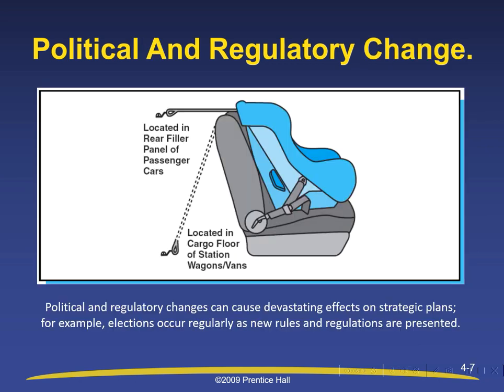Political and regulatory changes can cause devastating effects on strategic plans. For example, elections occur regularly as new rules and regulations are presented. As we can see in the diagram, the baby seat can sometimes be located in the rear filler panel of passenger cars, and changes could mean it is located in the cargo floor of station wagons or vans.